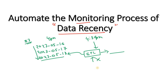Once the job fails, maybe a dedicated production support team member will come and inspect why it failed, understand that the data is not available in the latest partition, then mail the source team that data is not available. The production support team will then backfill this ETL job once the source team sends the data. So this is a kind of manual process.